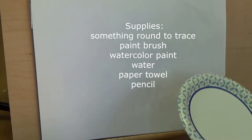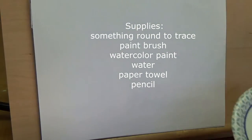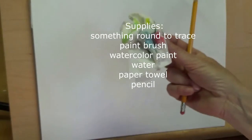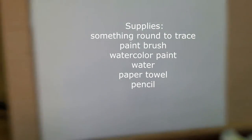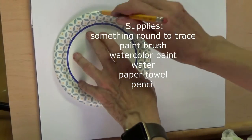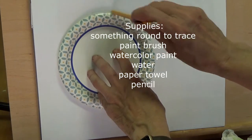Some of the things you're going to need is something round to trace, about how big mine is, a paintbrush, watercolor paint, water, a paper towel, and pencil and your paper that you're going to work on. My circle is about as big as my hand.